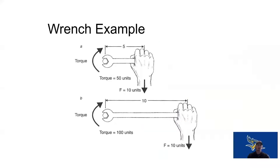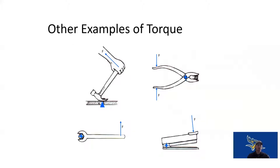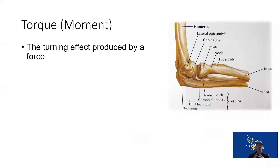We can also look at the wrench example — we use a wrench when turning a nut or bolt. Longer wrenches cause more torque because we have a longer lever arm for our motive force (our hand). That force applied at a distance from the axis creates torque. Other examples include a hammer pulling out a nail, scissors or pliers, or a stapler. Within the body, our joints are the axis and our bones are the levers.